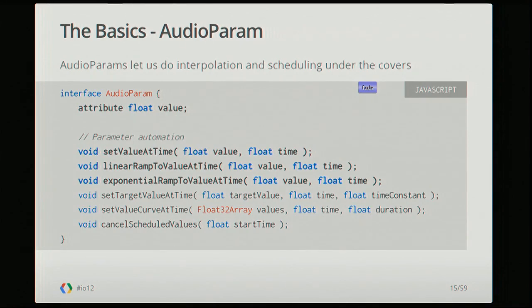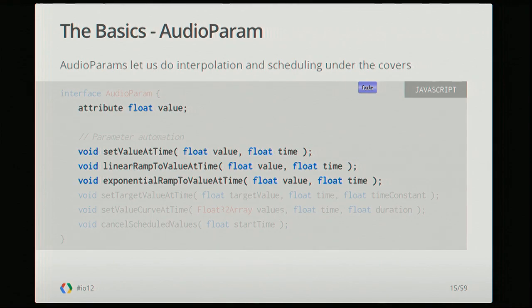Audio param is a complex type to understand at first, but ends up being super important. Most values you would think of in the Web Audio API — like the volume on a gain controlling node — are actually represented as audio params. You can get and set the value, but you can also schedule changes: set the value at a particular time in the future, or ramp a value over time — for example, ramp from zero to one over the course of the next couple of seconds. We handle that under the covers, so you get really smooth automation.